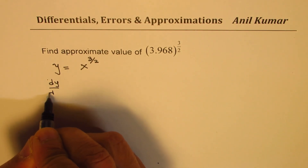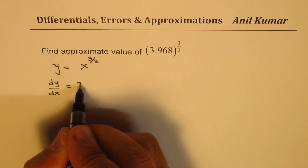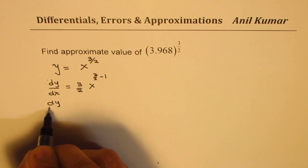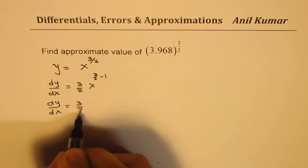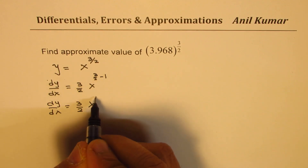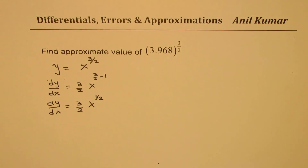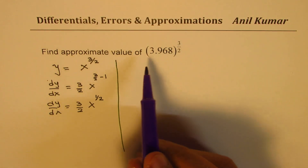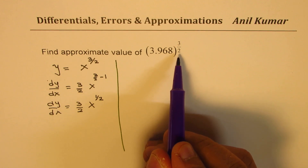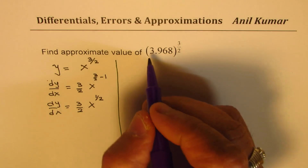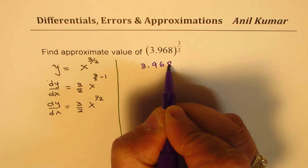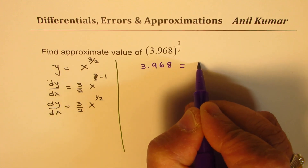So dy/dx, differentiating, we get 3 over 2 times x to the power of 3 over 2 minus 1, which is dy/dx equal to 3 over 2 times x to the power of 1 over 2, which is 3 over 2 times the square root of x. Now, how can you approximate 3.968 to the power of 3 over 2? Well, the closest value is 4, so we could think that 3.968 could be written as 4 minus 0.032.